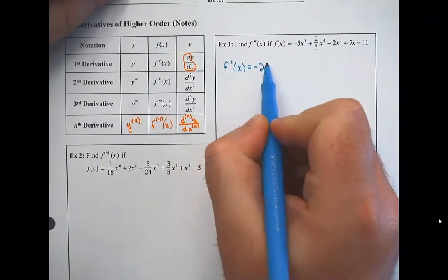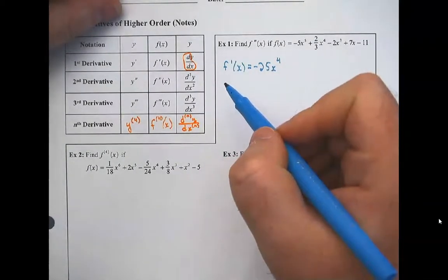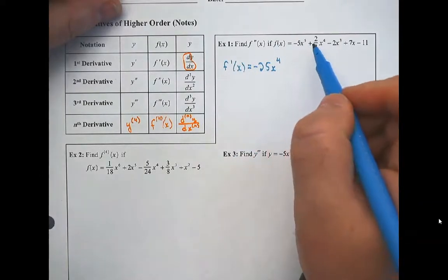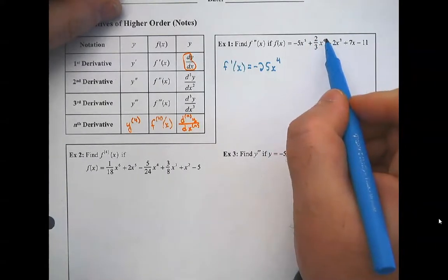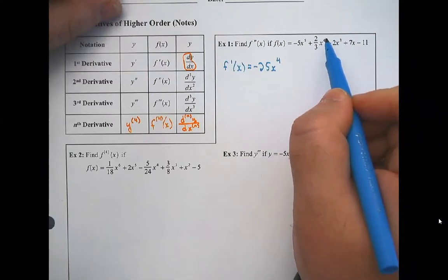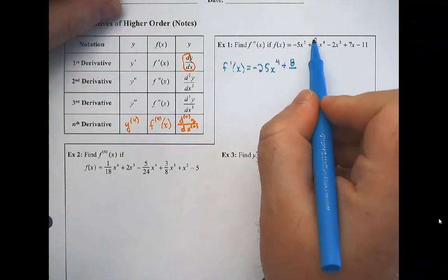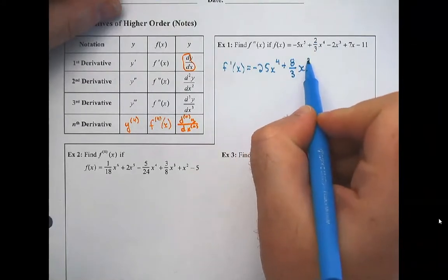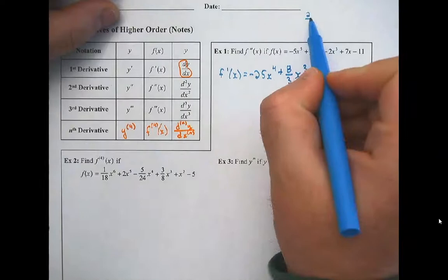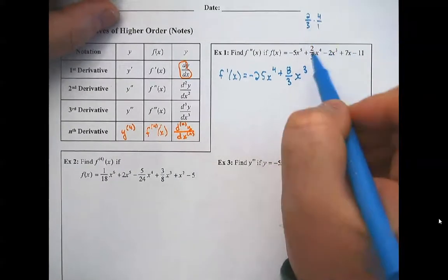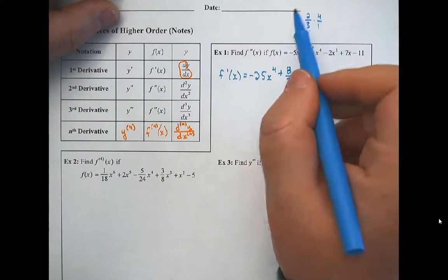Five times negative five is negative 25 x to the fourth. One important thing: I expect you to do all of this without a calculator — this is the non-calculator portion of the test. As calculus students, we need to get better at simplifying basic arithmetic. For example, when I multiply four by two-thirds, I write four as four over one, and four over one times two over three gives eight over three. If you can't do that in your head, work it out in the margins — just not with a calculator.